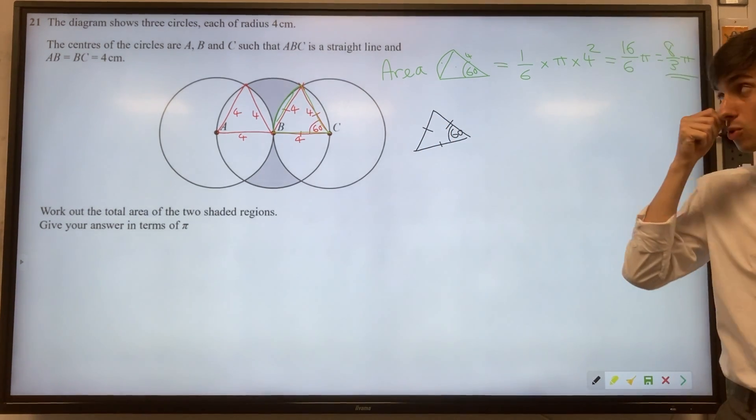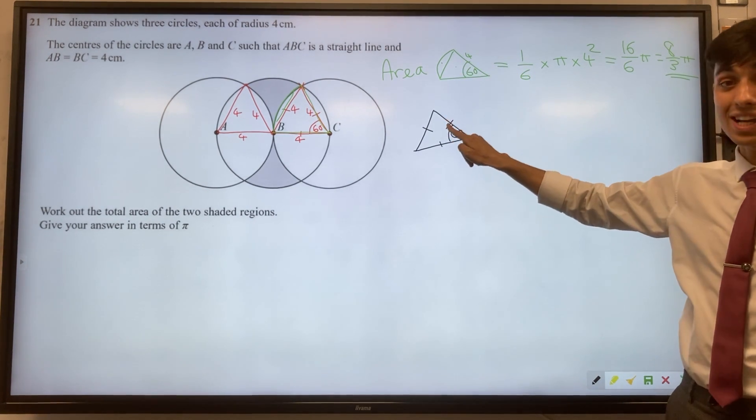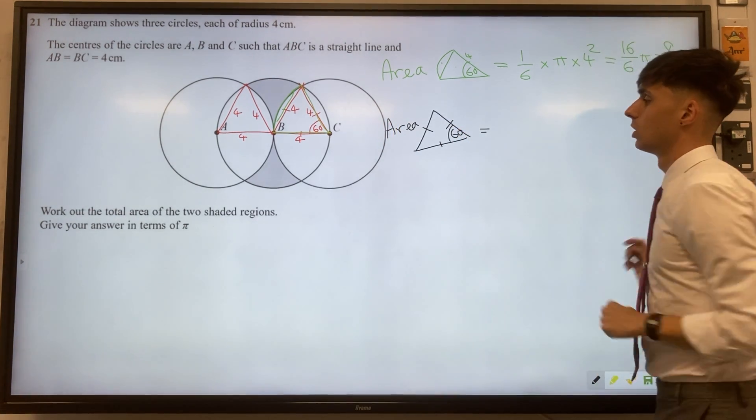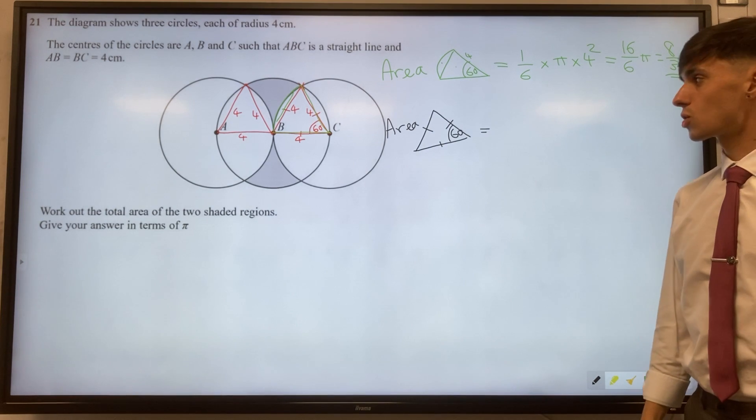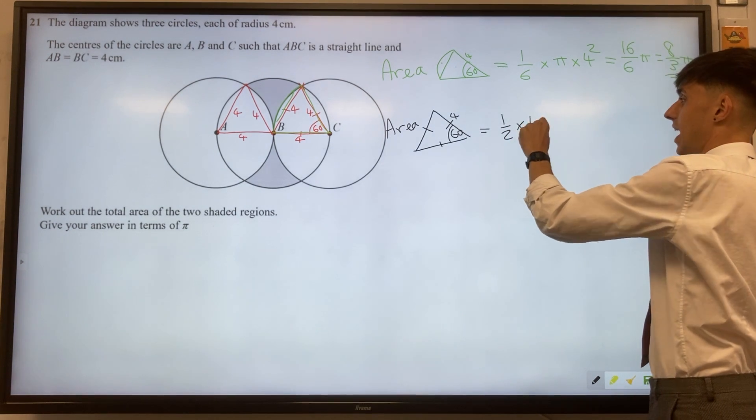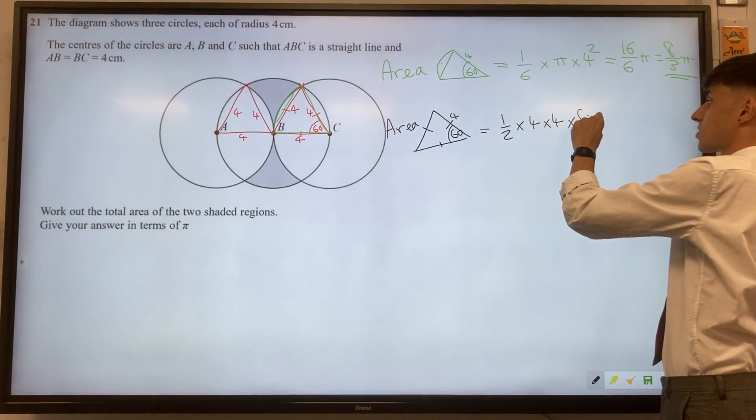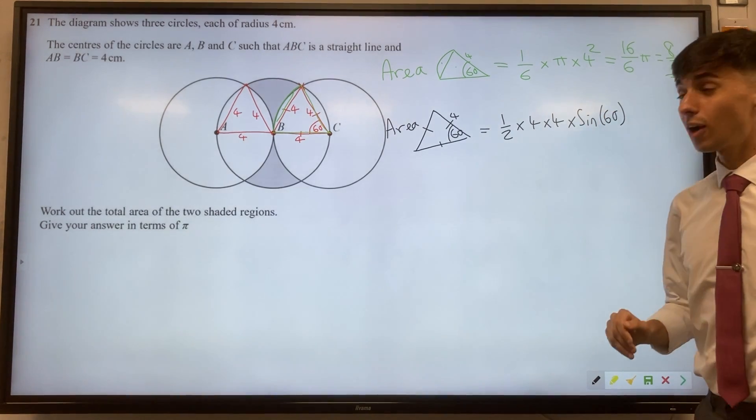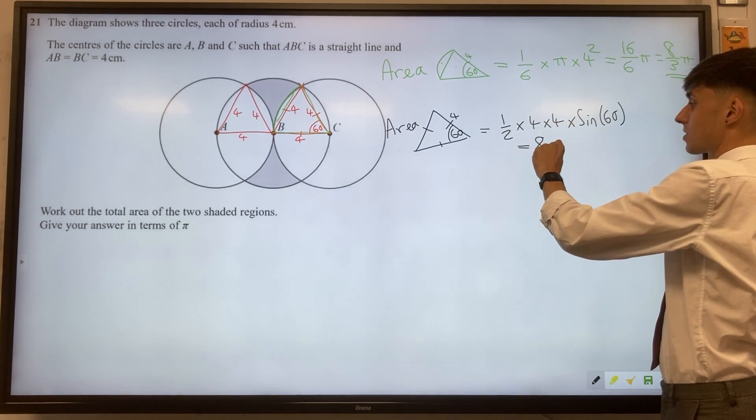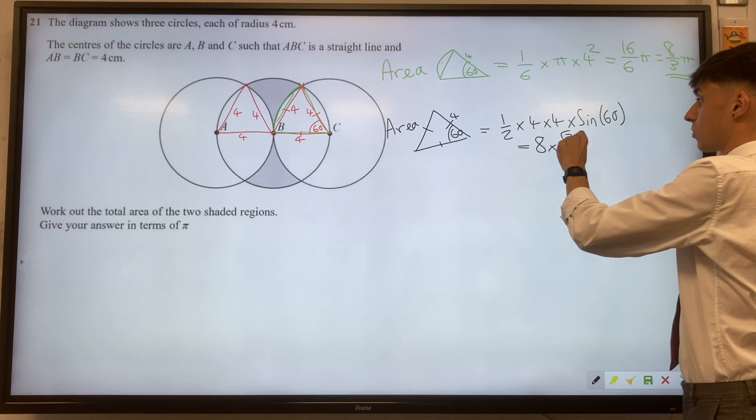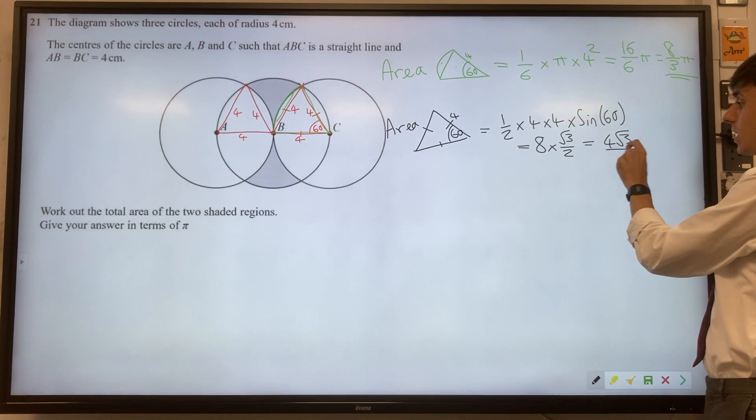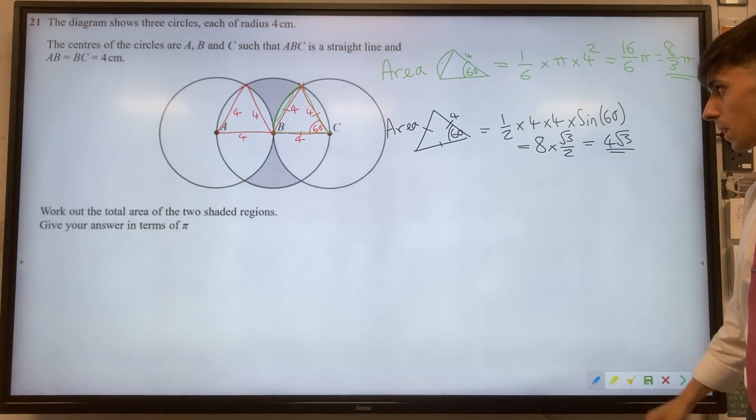For the equilateral triangle, we can use ½ab sin C. For this triangle, we do ½ × 4 × 4 × sin 60. Luckily, that's an exact trig value we know. ½ × 4 × 4 gives you 8, and sin 60 is √3/2, so that gives us an answer of 4√3 for the triangle.